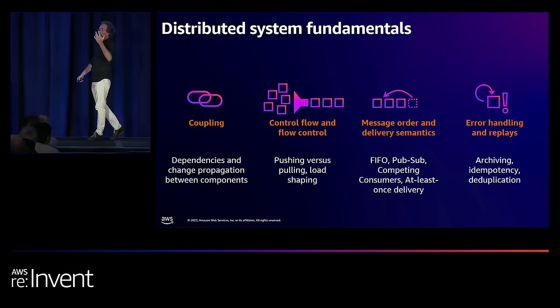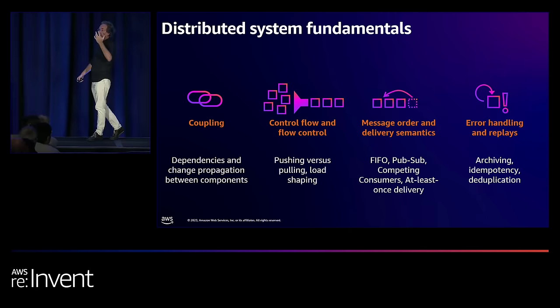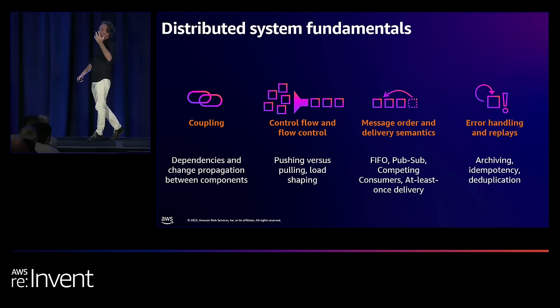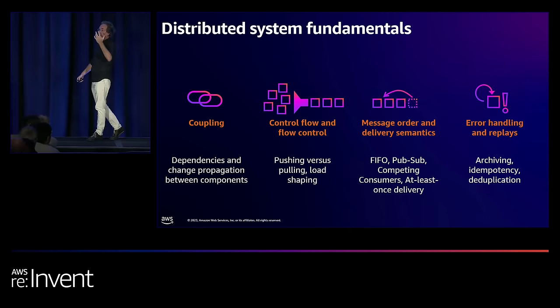EventBridge supports many sources and many targets. EventBridge is passive — events get pushed to it (the 'nose' from the source). It can filter, transform, and route, then publish to targets like SQS. Using the control-flow icons: event source pushes to EventBridge, EventBridge pushes to SQS. Everything flows nicely from left to right, which is why EventBridge works very well in this configuration.